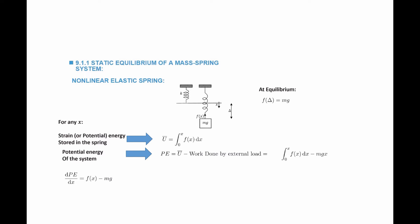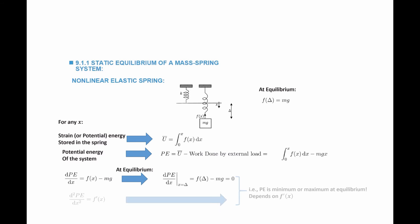Similar to the linear case, the rate of change of potential energy with respect to x gives f(x) minus mg. At equilibrium, substituting x equals delta, the potential energy is also minimum. To determine whether it is maximum or minimum, we calculate the second derivative of potential energy with respect to x squared, which equals the slope f prime of x. So whether the potential energy is minimum or maximum at equilibrium depends on the slope f prime of x.